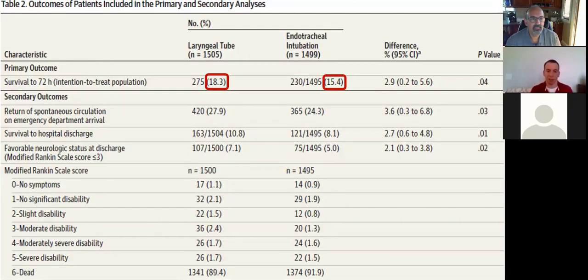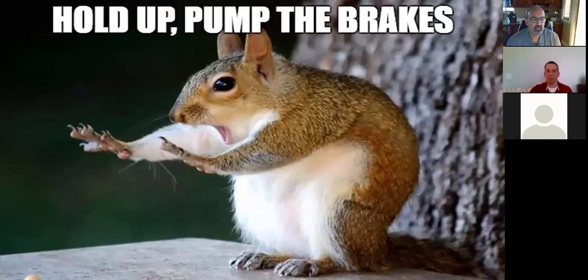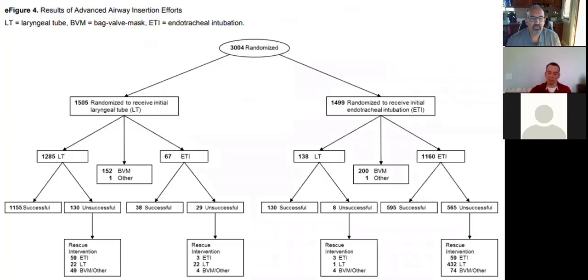Here's what the published numbers showed and we're looking at the intent to treat group. The king airway, 18.3% made it to 72-hour survival. Endotracheal group, 15.4% made it to 72-hour survival. ROSC rates were a little bit higher in the king airway group. So was survival to hospital discharge and so was favorable neurological outcome. So the conclusion that you see at the top of the paper is that initial king insertion had a higher survival rate at 72 hours compared to the endotracheal intubation.